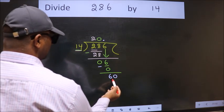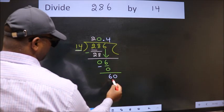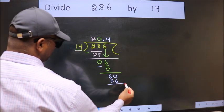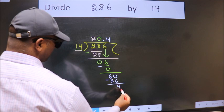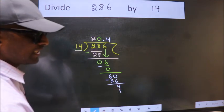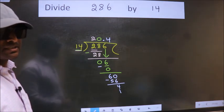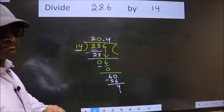A number close to 60 in 14 table is 14 times 4 is 56. Now we subtract, we get 4, and you continue the division. I am not doing that. Did you understand where the mistake happens? You should not do that mistake.